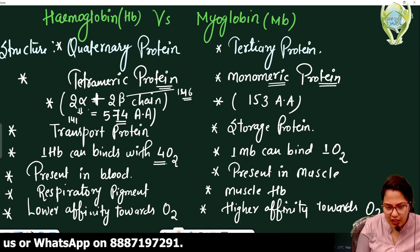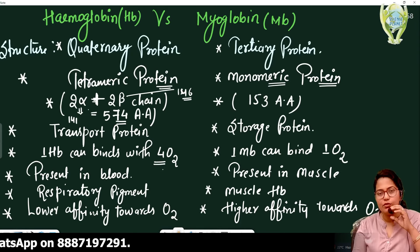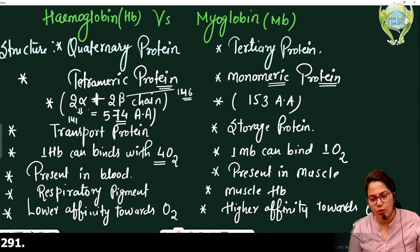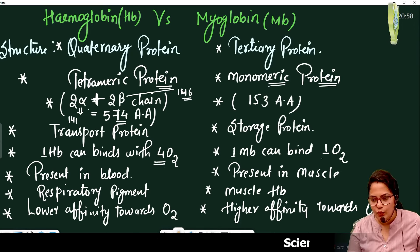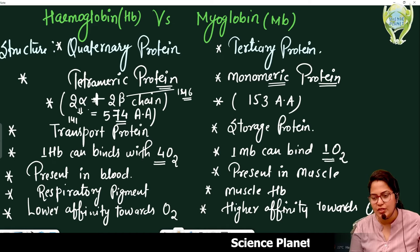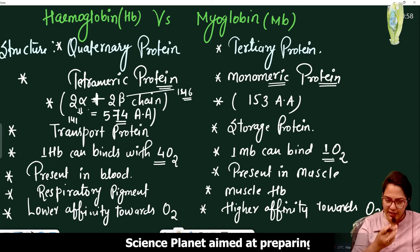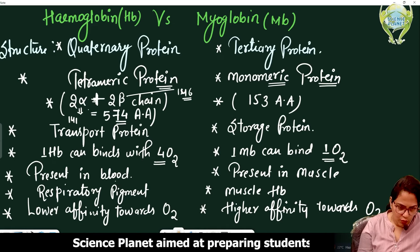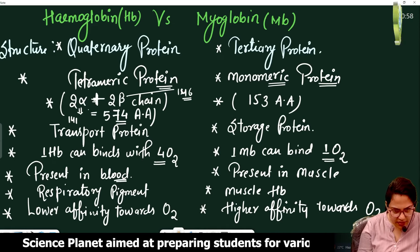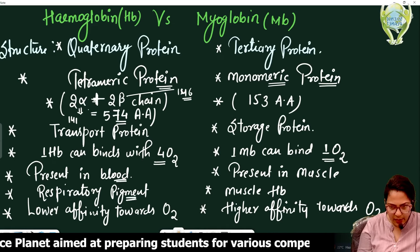Hemoglobin has 4 heme groups in the body and can bind 4 oxygen molecules. Myoglobin has 1 heme group and can bind 1 oxygen molecule. Hemoglobin is also called a respiratory pigment, while myoglobin is known as muscle hemoglobin.